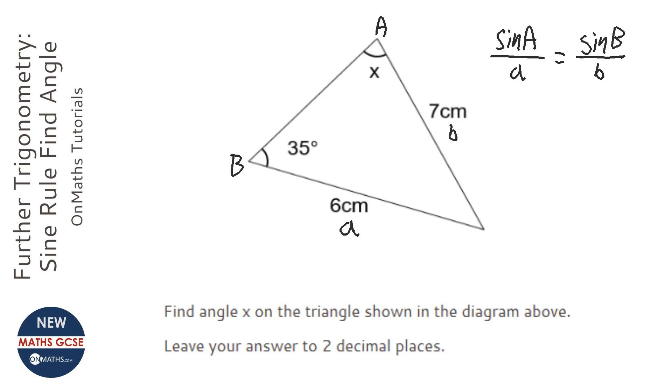Ok, so we are putting what we know. So sin x over 6 equals sin 35 over 7.